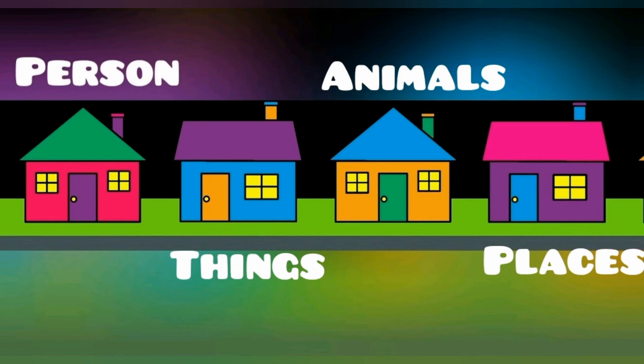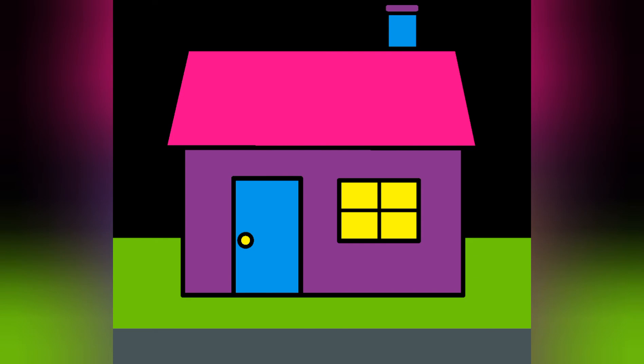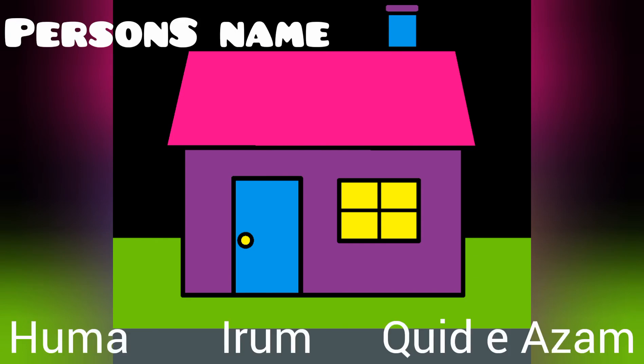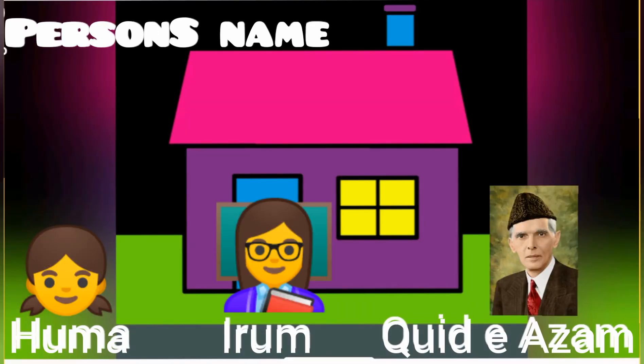In the last house there are names of places. Now the first house is for person's names. So I have to select some names from this. First I will select my best friend's name, then my teacher's name, and a national name. From this house I will select three names: Huma, Iram, and Quaid-e-Azam.